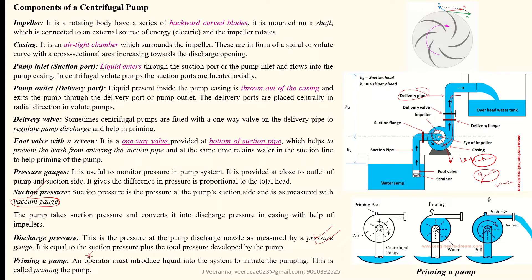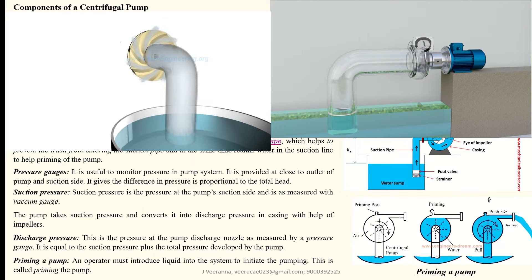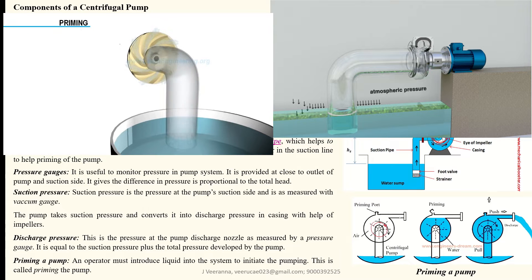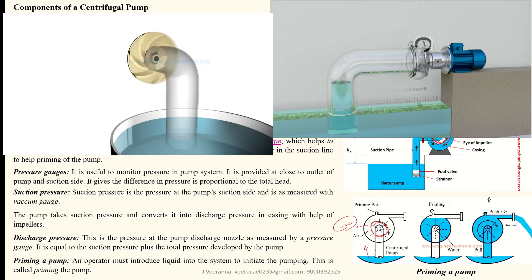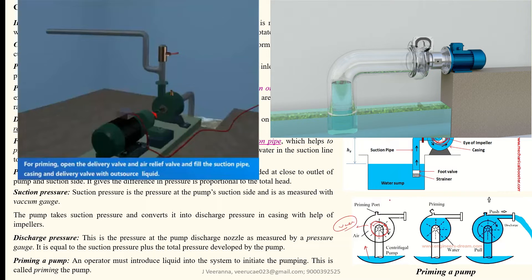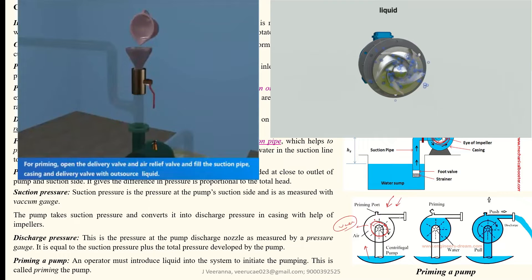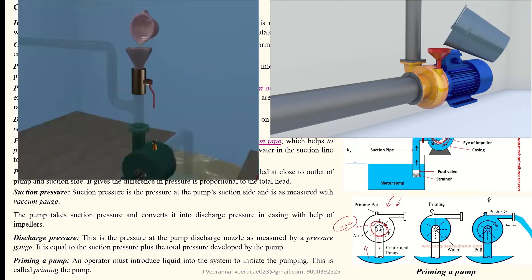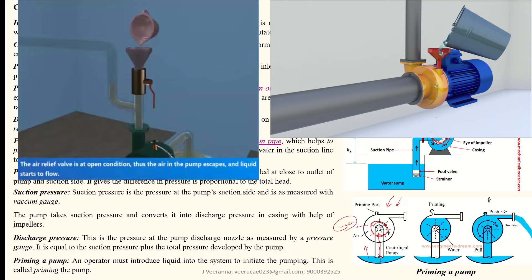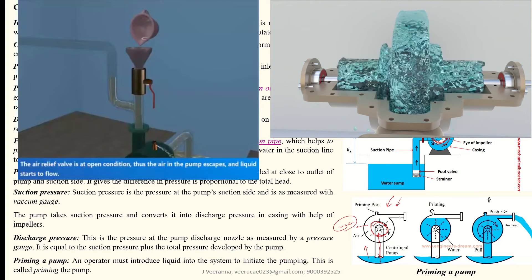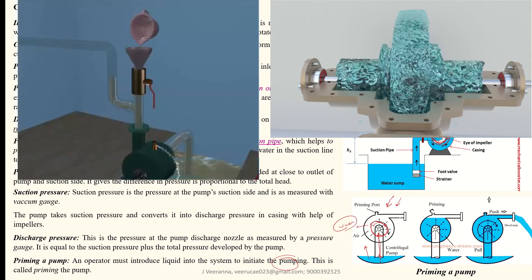Pump priming is very important. When there is no water in the impeller, the impeller rotates and a vacuum is created, but the water will not move into the impeller. So we must manually add water to the impeller using special provisions to ensure continuous flow from the source to the impeller. The operator must introduce liquid into the system to initiate pumping — this is called pump priming.